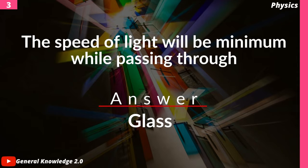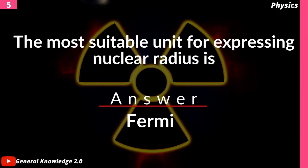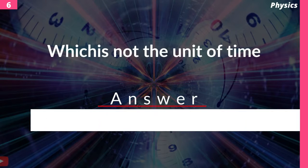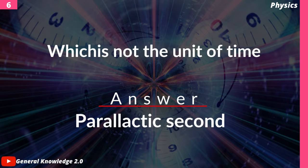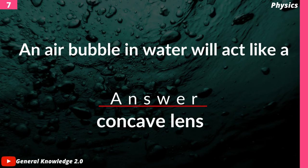answer: glass. Which is not a vector quantity? Answer: speed. The most suitable unit for expressing nuclear radius is — answer: fermi. Which is not the unit of time? Answer: parsec.